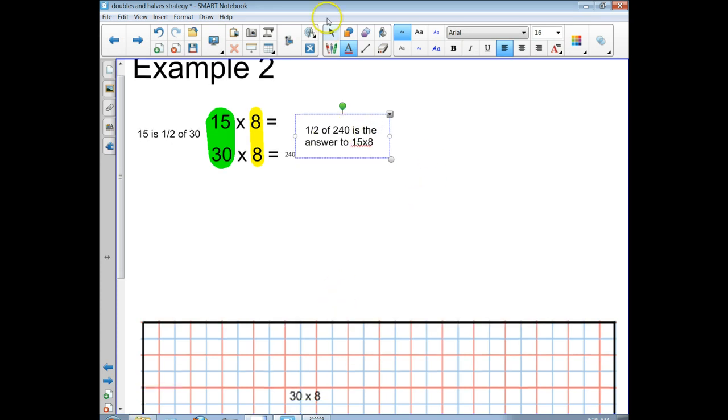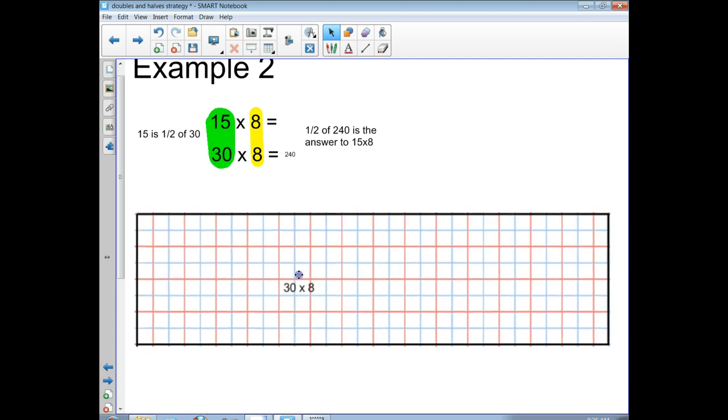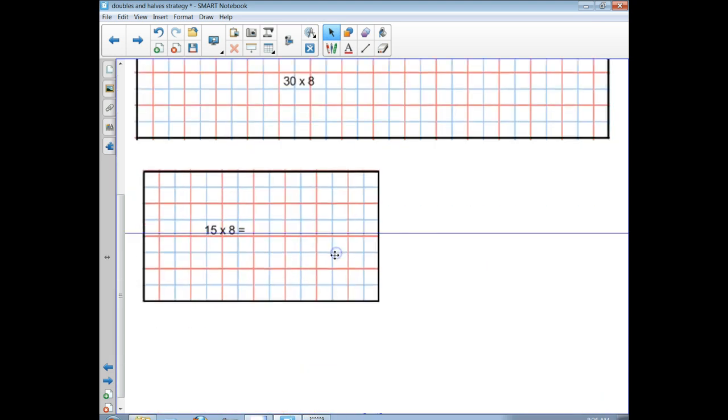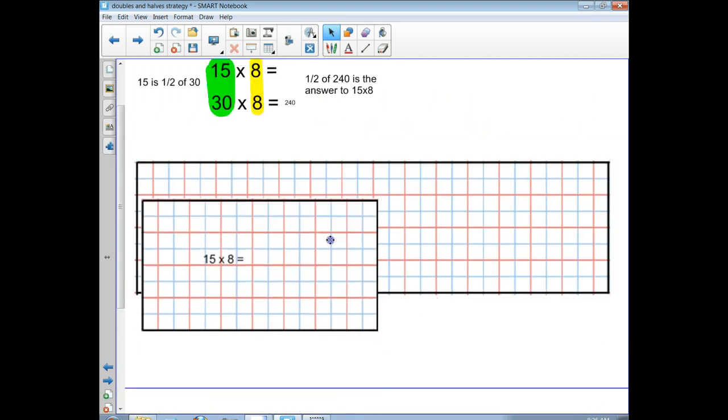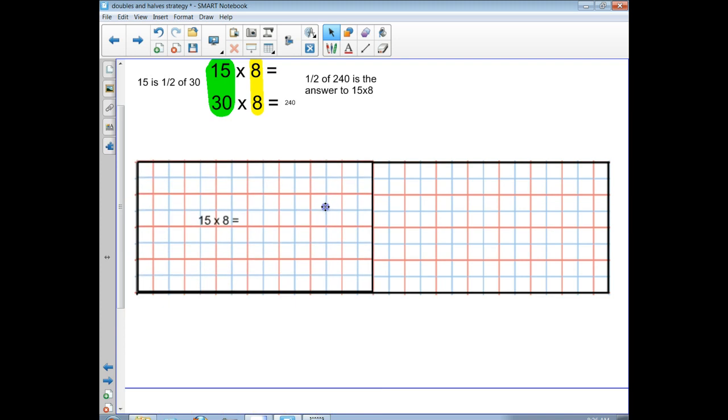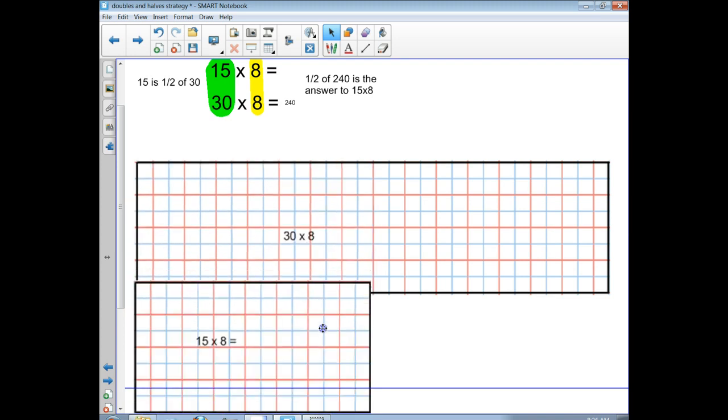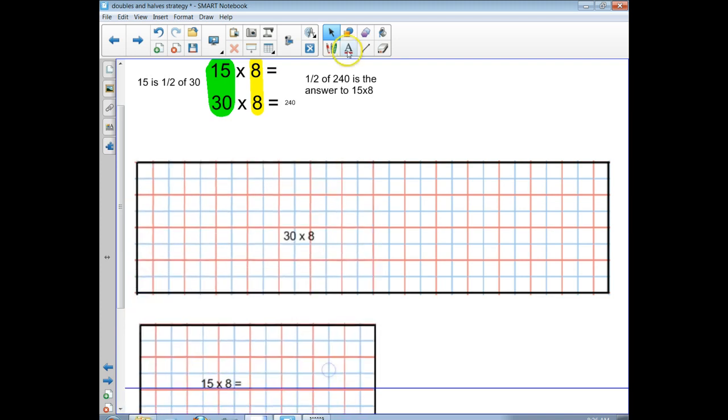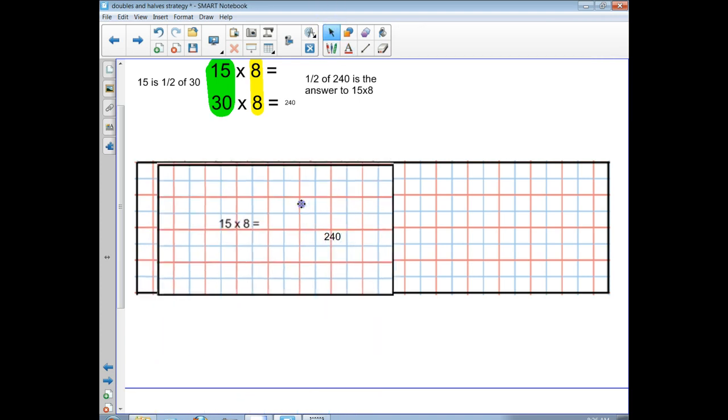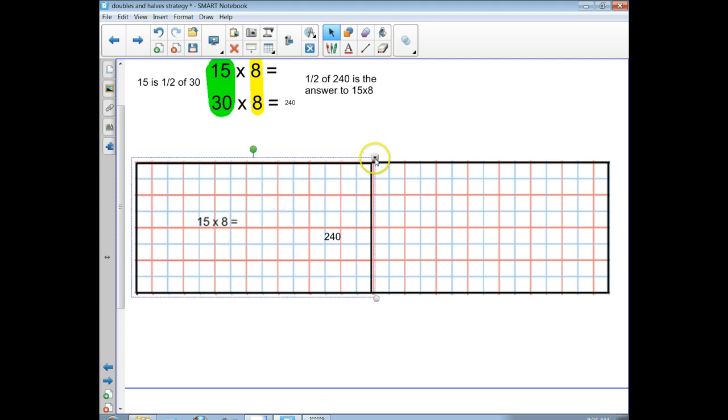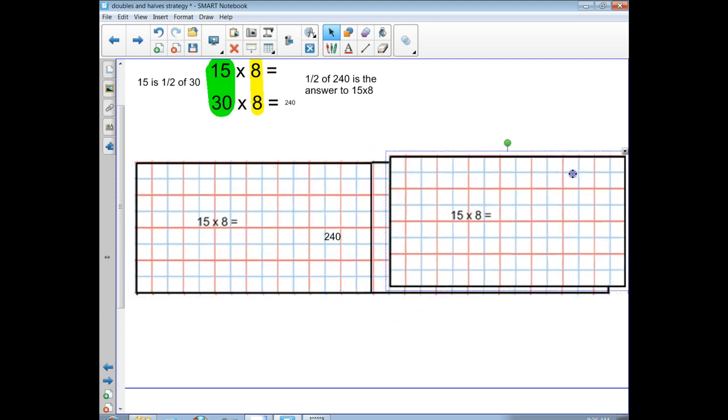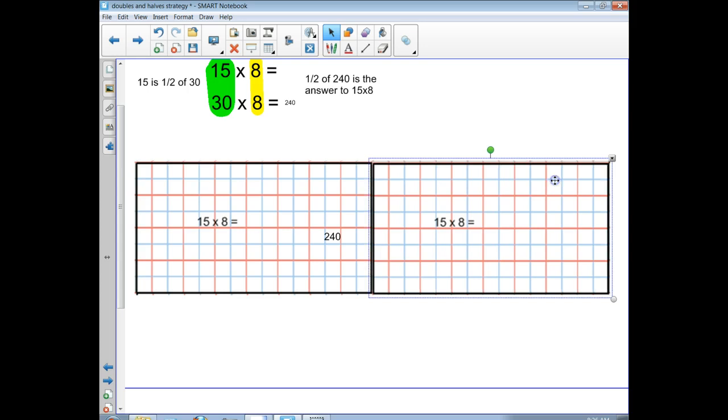All right, so let's look at an array here. I've got 30 times 8, and then I've got 15 times 8. So let me put my 15 times 8 over here, and I know that this one is 240. So let's pull this one over.